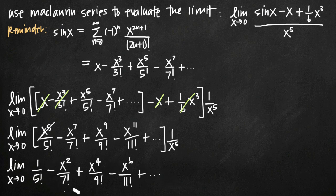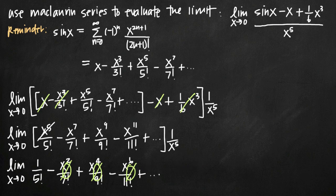Now we've got our limit simplified to something we can actually evaluate. As x goes to zero, any term with an x in the numerator becomes zero — x squared over 7 factorial becomes zero, and every term after it becomes zero as well. All we're left with is the first term: the limit as x goes to zero of 1 over 5 factorial. Since there's no x in that term, we can't plug in zero — the value is simply 1 over 5 factorial, which equals 1 over 120.